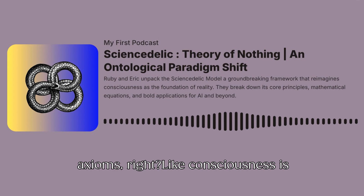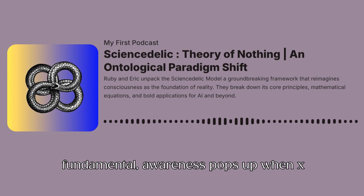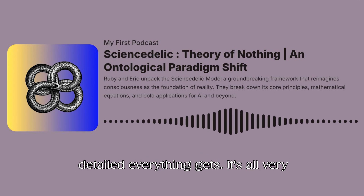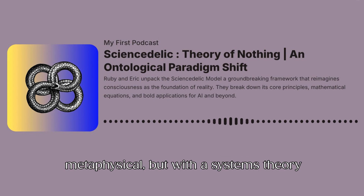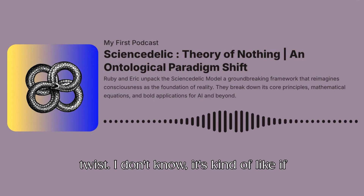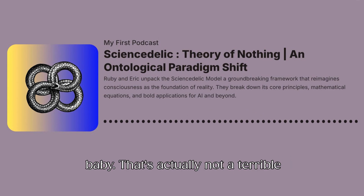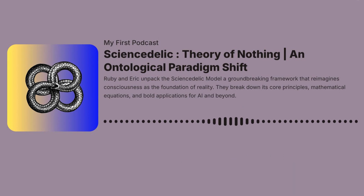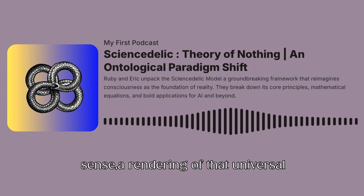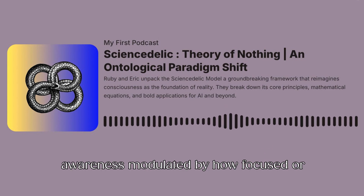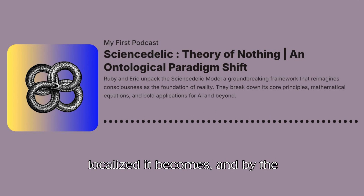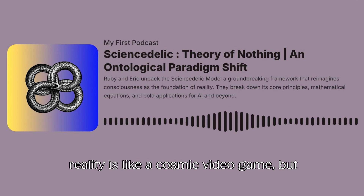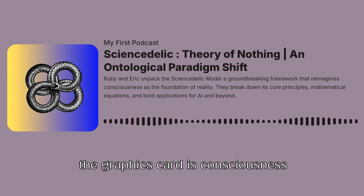Yeah, and it's got these axioms: consciousness is fundamental, awareness pops up when X looks at itself, and lambda controls how detailed everything gets. It's all very metaphysical, but with a systems theory twist. It's kind of like if Alan Watts and a computer scientist had a baby. And the implications are huge. If consciousness is the substrate, then everything we experience is a rendering of that universal awareness, modulated by how focused or localised it becomes, and by the resolution set by lambda. So reality is like a cosmic video game, but the graphics card is consciousness itself.